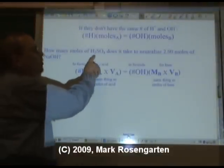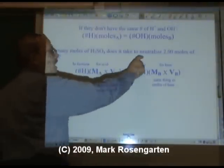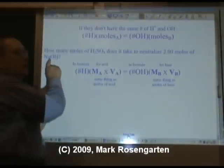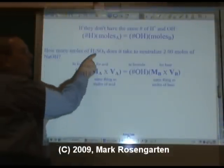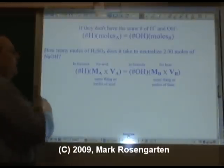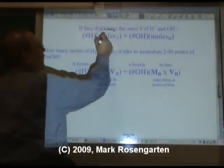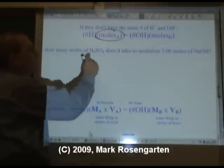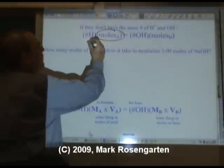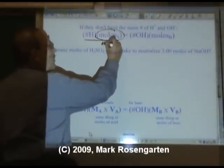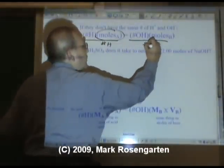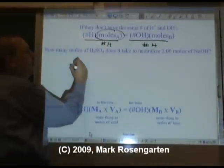So how many moles of H2SO4 does it take to neutralize two moles of NaOH? Notice that the base has only one hydroxide, the acid has two hydrogens. So we're trying to find moles of H2SO4. That's moles of acid. So we rearrange the equation, divide both sides by number of hydrogens, and that gets moles of acid by itself.